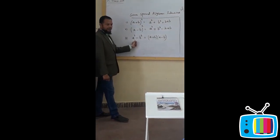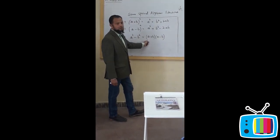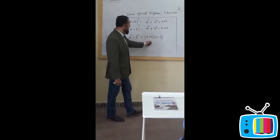And the third identity will be a² minus b² which will always be equal to product of (a+b) and (a-b).